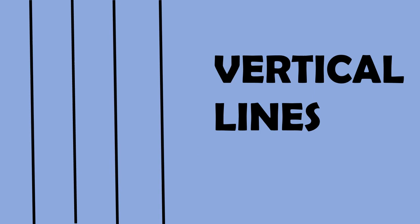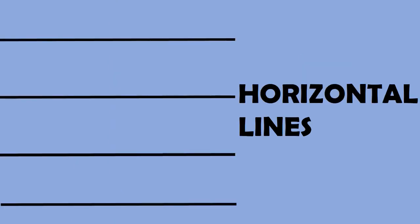Students, standing lines in maths are called vertical lines. What are they called as? Yes, vertical lines. And sleeping lines in maths are called horizontal lines. What are they called as? Horizontal lines.